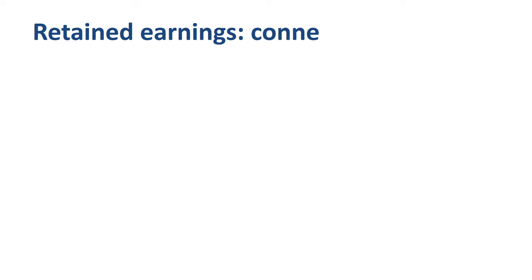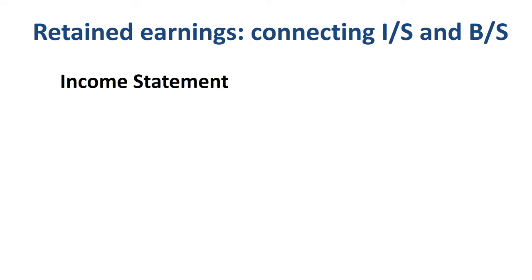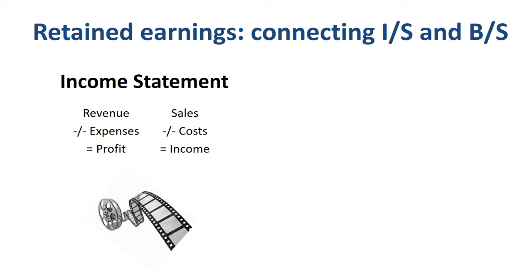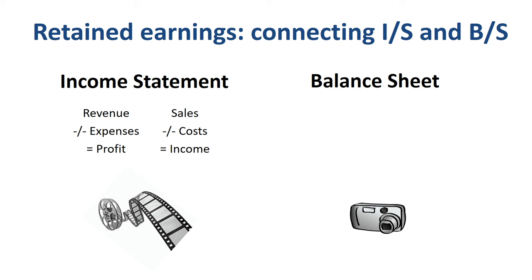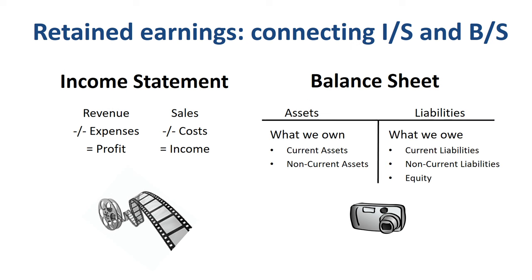Retained earnings are one of the items that connect the income statement and the balance sheet. The income statement, or profit and loss statement, is like a movie about profitability during a period — a month, a quarter, or a year. The balance sheet is like a picture at a point in time, usually the end of a month, a quarter, or a year, of what a company owns and what it owes.